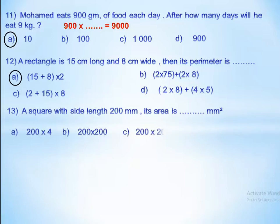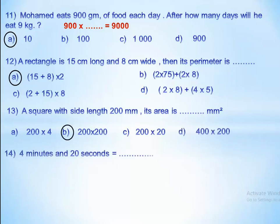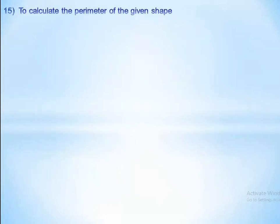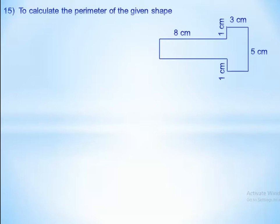A square with side length 200 millimeters: its area equals side times side, which is 200 times 200. For converting 4 minutes and 20 seconds to seconds: multiply 4 times 60 equals 240, then 240 plus 20 equals 260 seconds.